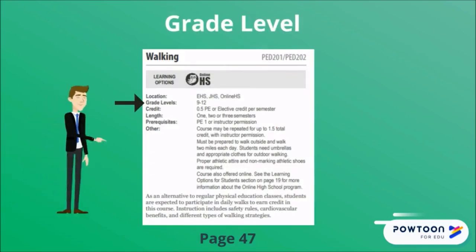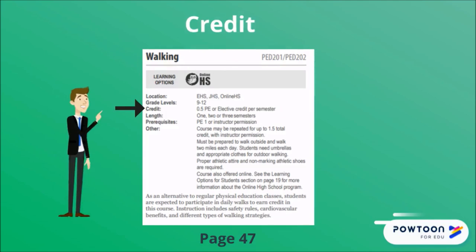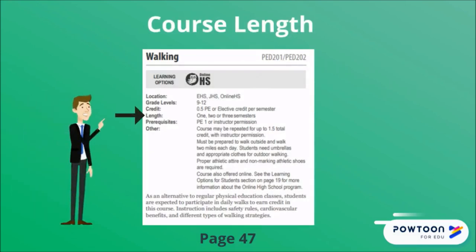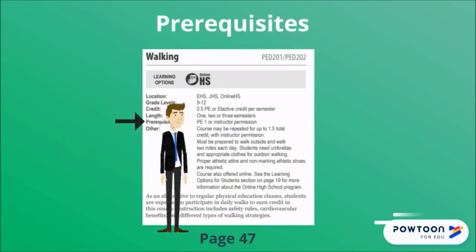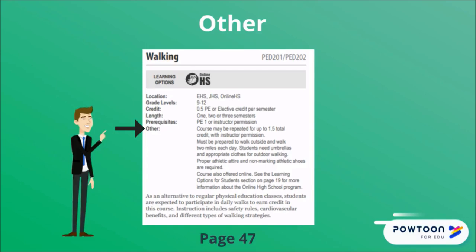Fourth is the grade level of the course. Again, pay attention as some classes are only offered for certain grade levels. Next is credits that the class offers; some classes fulfill multiple credit requirements and will be listed here. Next is the length of the course, which is either one semester or year-long, which equals two semesters. Pre-requisites are courses you will need to complete before you can request the course — for example, walking requires completion of PE-1 before you can request it. Other contains additional information you might need to know, including equipment and clothing needs, whether the class is repeatable for credit, and additional credit offerings.